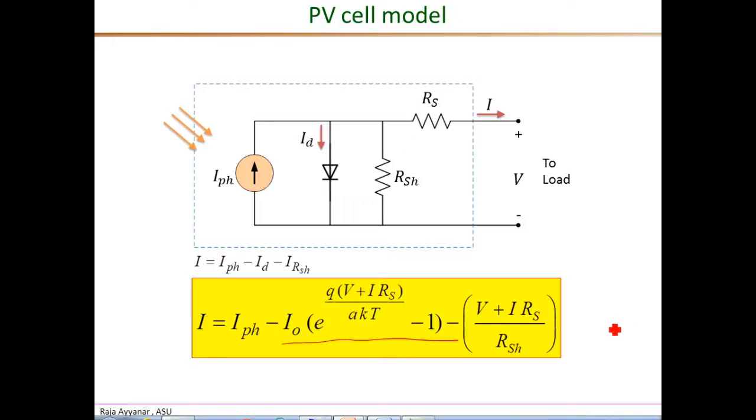The module manufacturers give the currents and voltages at a few salient conditions. They also sweep the terminal voltage from zero to open circuit voltage and give the corresponding current versus voltage and the power versus voltage plots. Now, these information together can be used to determine the various parameters like the I-photon, the two resistances and the diode characteristics.